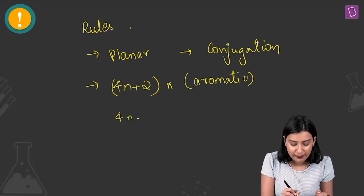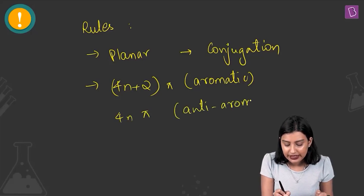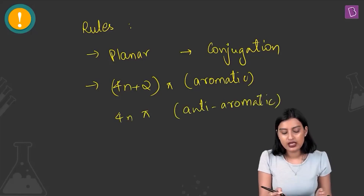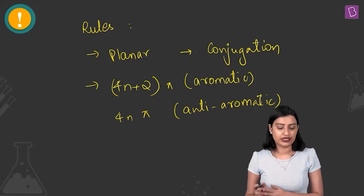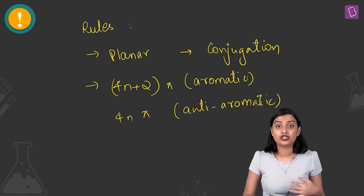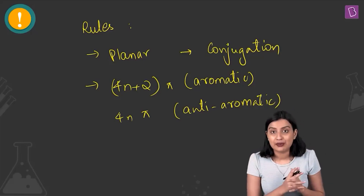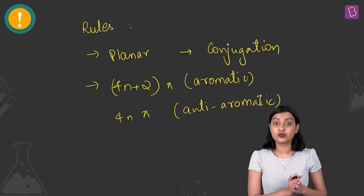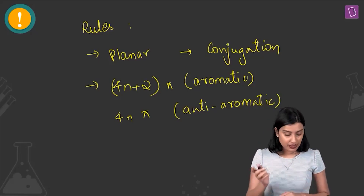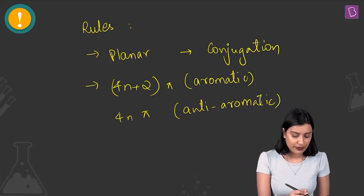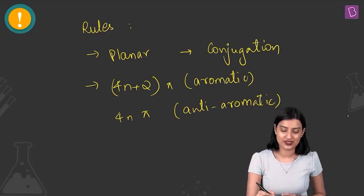If a molecule fails any of these three rules, it is non-aromatic. If it is not planar or does not have conjugation, it is non-aromatic. These rules apply to cyclic compounds. Now let's look at the options and see which agrees with Hückel's rules.